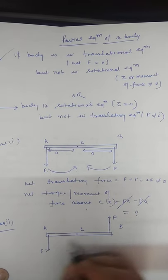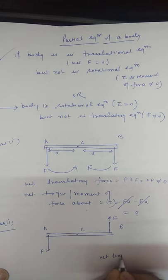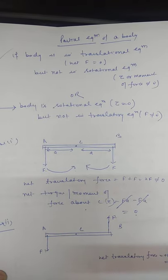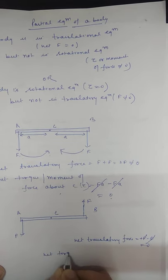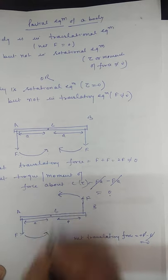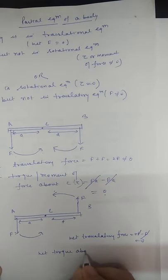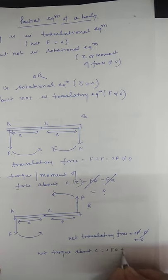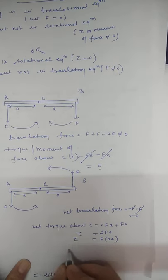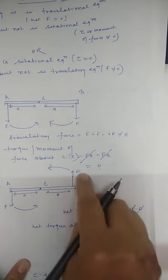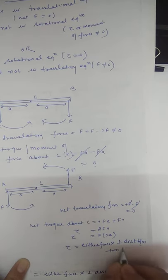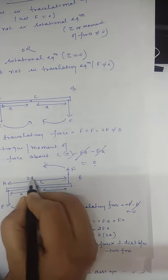The forces are in opposite directions, so they cancel. The net translatory force is +F − F = 0. Now, the net torque about point C: both forces rotate the rod in the anti-clockwise direction, giving a torque of F×A + F×A = 2FA. This equals the force multiplied by the perpendicular distance between the two forces, which is 2A.